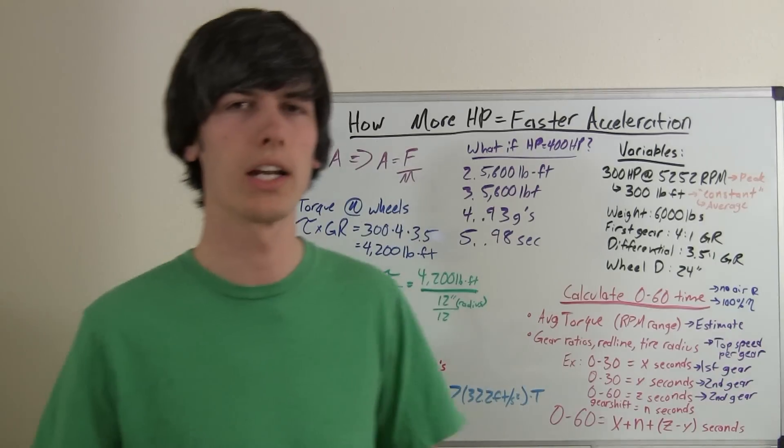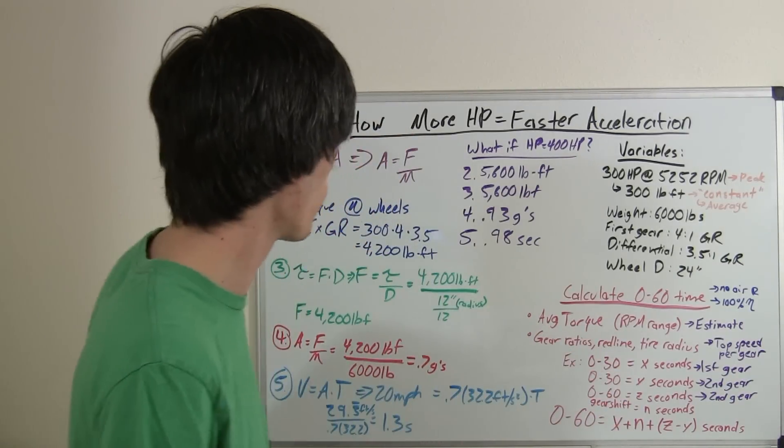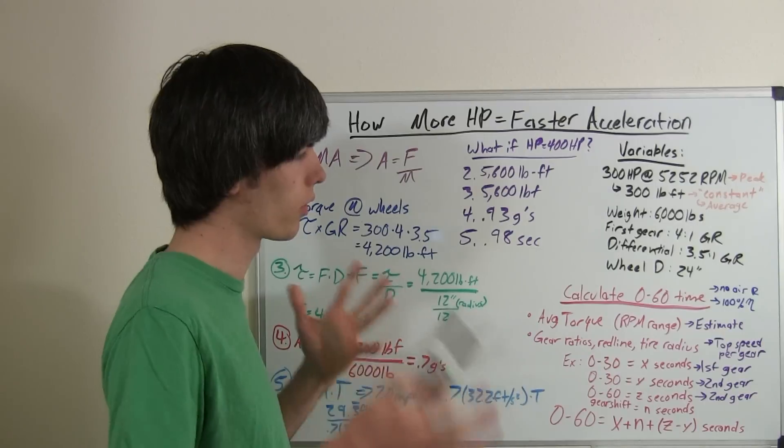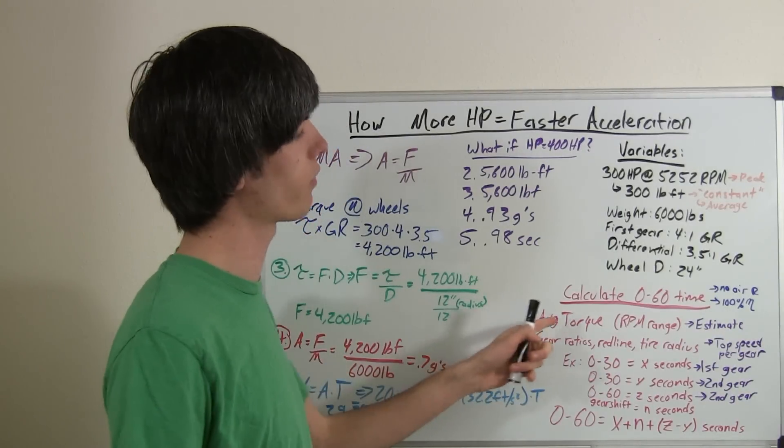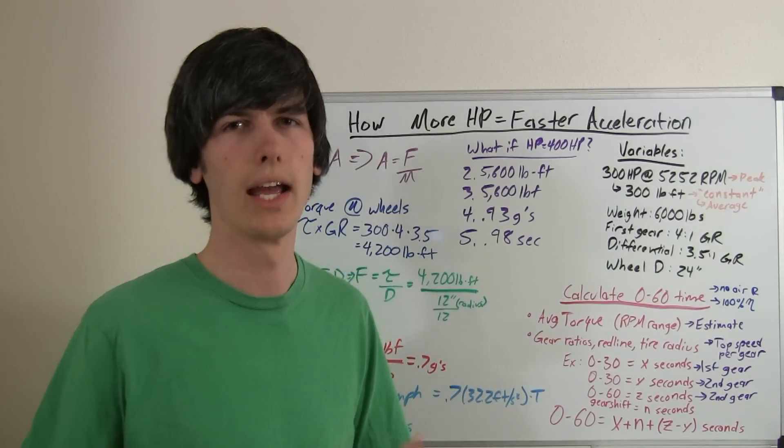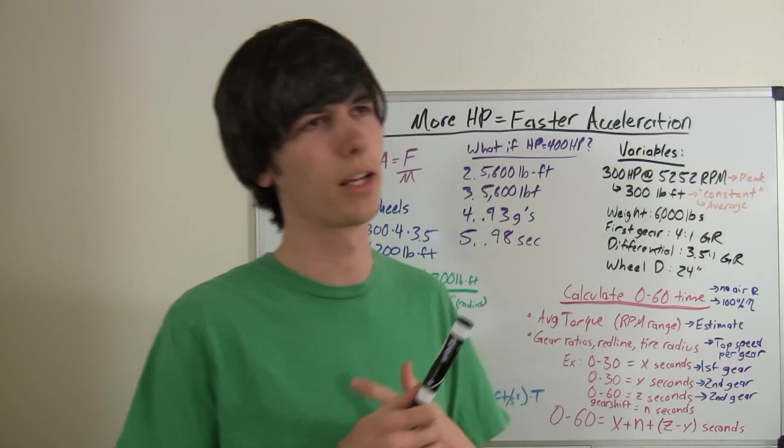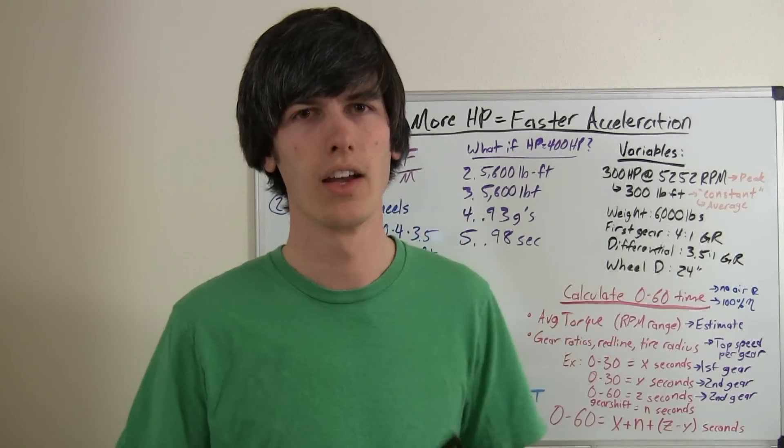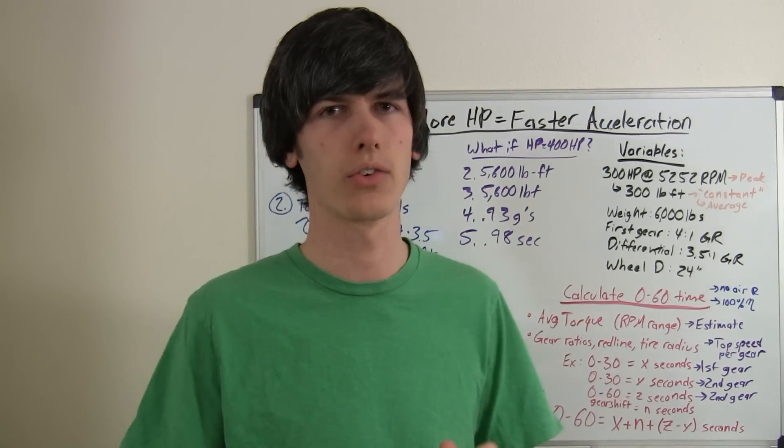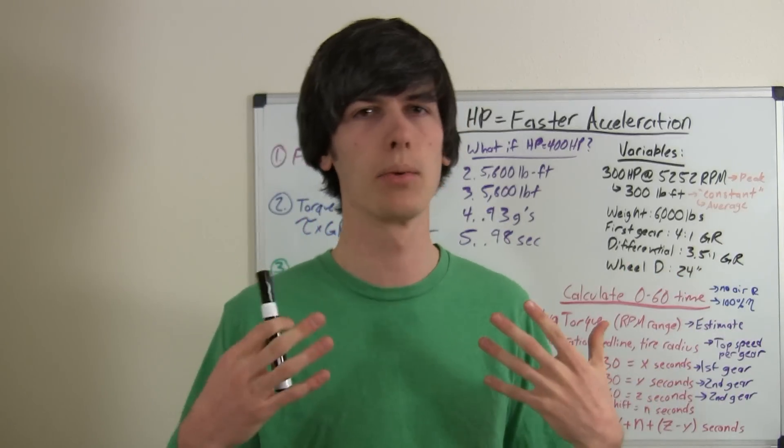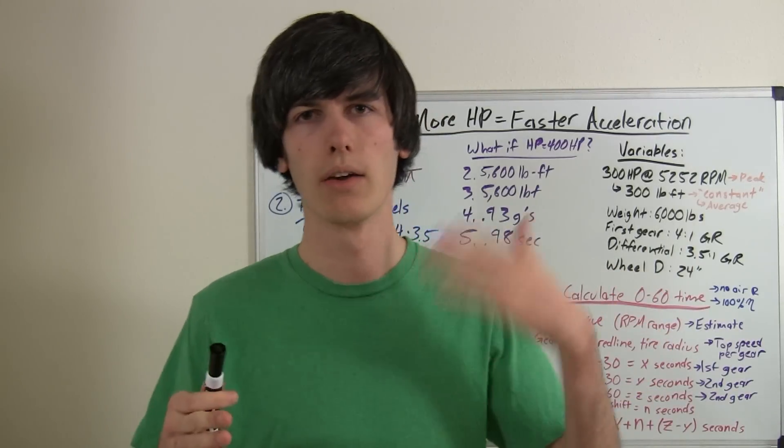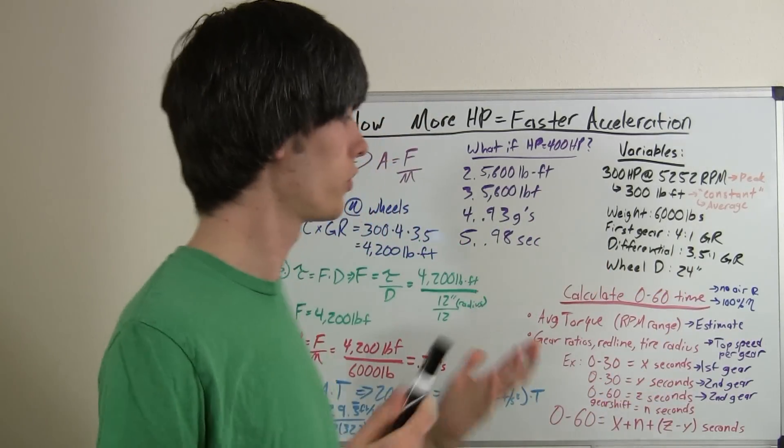So, one of the things I wanted to kind of enable you guys to do with this is to calculate your own theoretical 0 to 60 times of your cars. So, all you would need is an average torque across your RPM range, and, obviously, this is going to be an estimation, because there's not really such an accurate statement out there. None of the engine manufacturers are going to say, here's your average torque. But, they may give you something like an available 200 pound-feet of torque from this RPM to this RPM. So, you can use that.